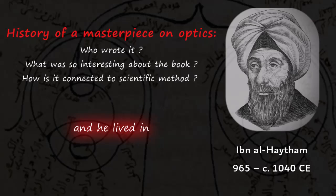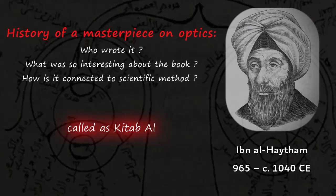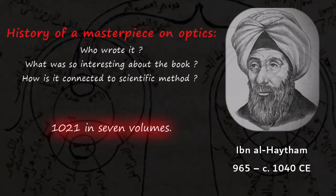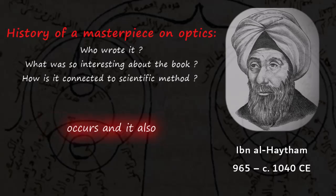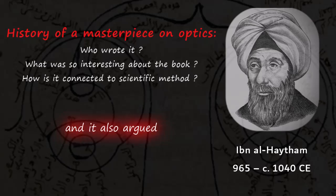He lived in Cairo ever since he moved there and eventually died in 1040 CE. The book itself was called Kitab al-Manzir and it was written from 1011 to 1021 in seven volumes. It explained how vision occurs and also told that the perception of light which we have is essentially due to light reflecting from an object into the eyes.